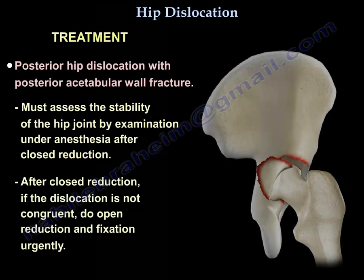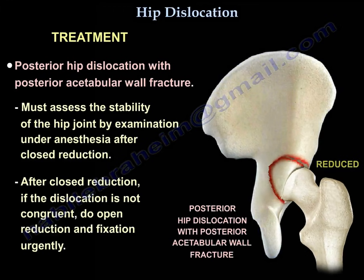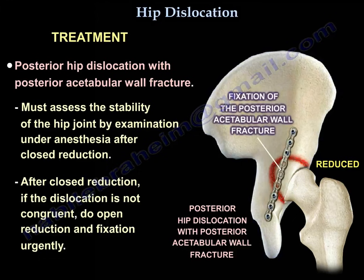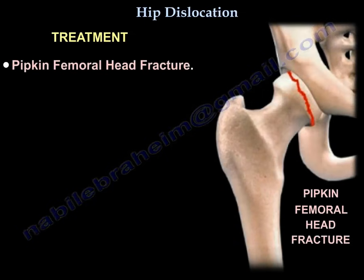For posterior hip dislocation with posterior wall fracture, assess the stability of the hip joint by examination under anesthesia after closed reduction. If the reduction is not congruent, perform open reduction and fixation urgently. Here is an example of fixation of the acetabular fracture, and here is an example of fixation of the Pipkin femoral head fracture.